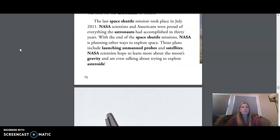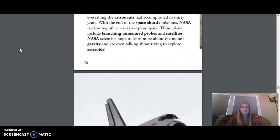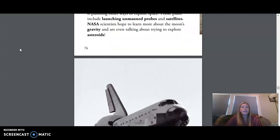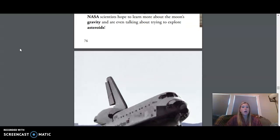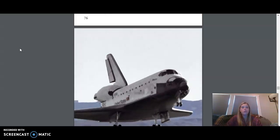The last Space Shuttle mission took place in July 2011. NASA scientists and Americans were proud of everything the astronauts had accomplished in 30 years. With the end of the Space Shuttle missions, NASA is planning other ways to explore space. Those plans include launching unmanned probes and satellites. NASA scientists hope to learn more about the Moon's gravity and are even talking about trying to explore asteroids.